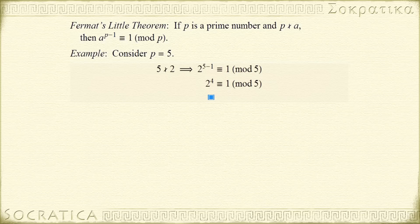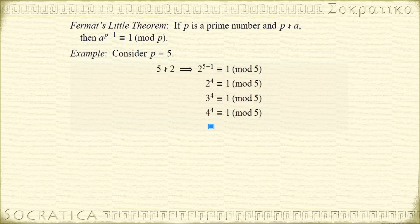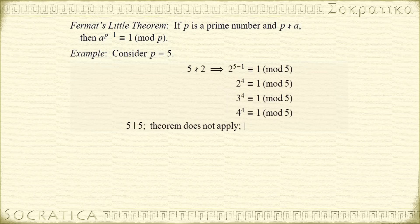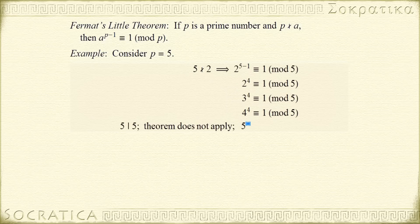Similarly, p does not divide 3, so 3 to the 4th is congruent to 1 mod 5. p does not divide 4, so 4 to the 4th is congruent to 1 mod 5. Now p does divide 5, so the theorem does not apply in this case. And in fact, 5 to the 4th is congruent to 0 mod 5.